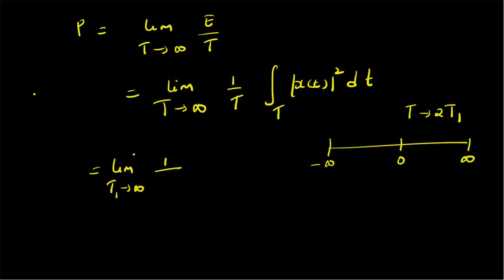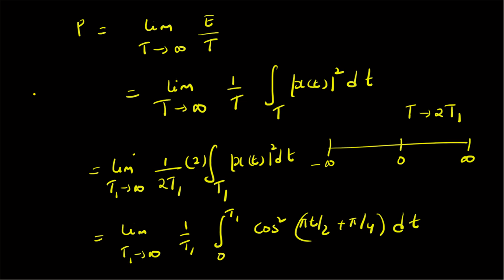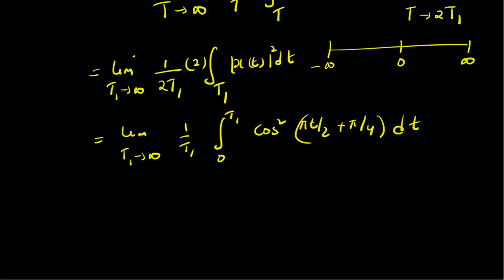Since the cosine function is periodic, we can write T₁ as n times the fundamental period T₀, repeated twice. This becomes the limit as T₁ tends to infinity of (1/T₁) times the integral from 0 to T₁ of cos²(πt/2 + π/4) dt. Since T₁ = n·T₀, we rewrite the limits accordingly.